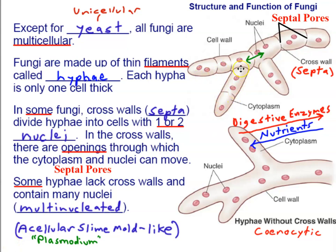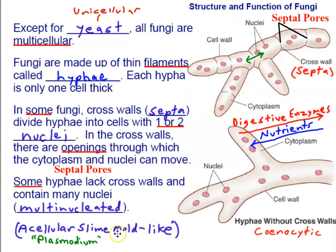As you can see in the diagram, hyphae that do have septa can have more than one nucleus in each cell — either one or two nuclei — because the septal pores are large enough for nuclei to pass through. Other hyphae have no septa and no cross walls at all; the cytoplasm is continuous and the nuclei are just continuous within that cytoplasm, making these hyphae multinucleated. These are known as coenocytic hyphae — a vocabulary term referring to hyphae with no cross walls and no septa.